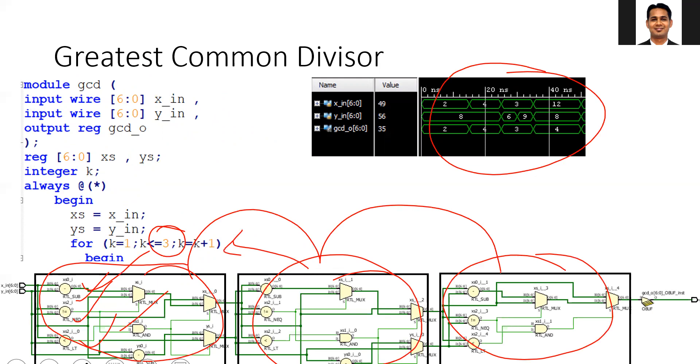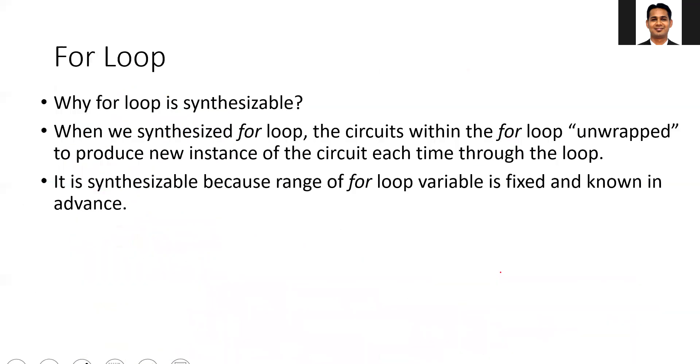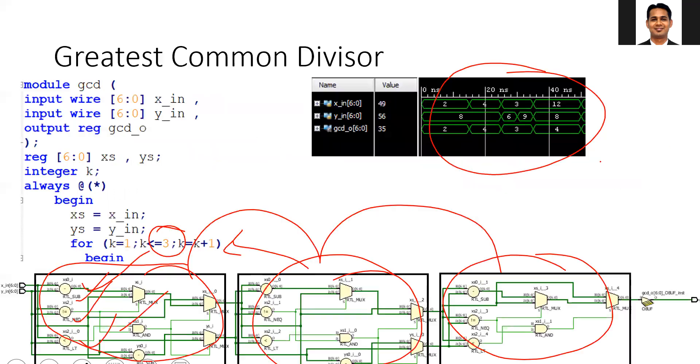Why is the for loop synthesizable? When we synthesize the for loop, the circuits within the for loop are unwrapped to produce new instances of the circuit each time through the loop. You are creating three blocks of hardware, one for every iteration. If you have ten iterations, you will create ten blocks of hardware.